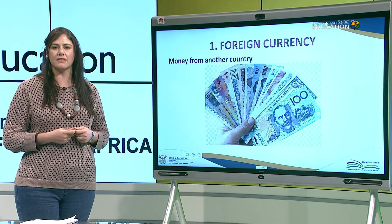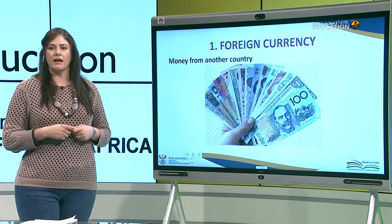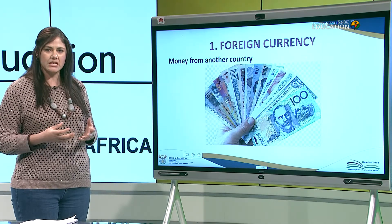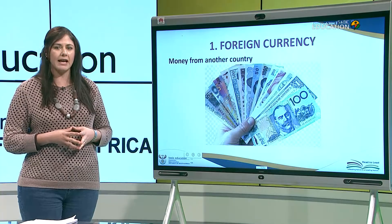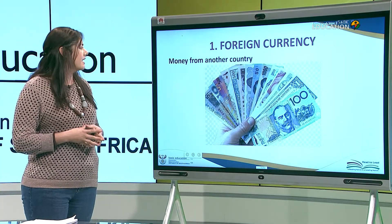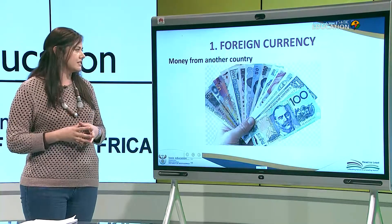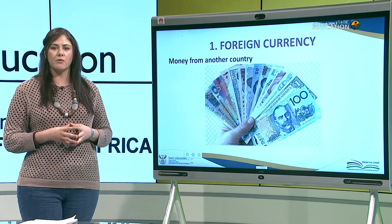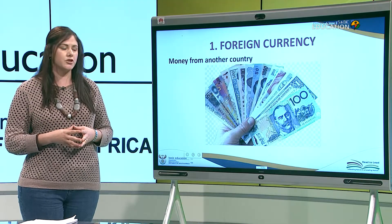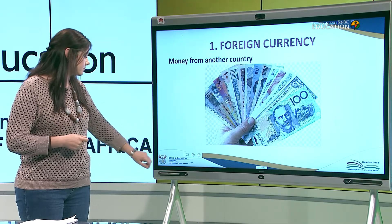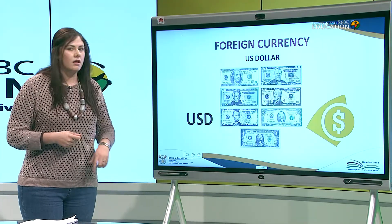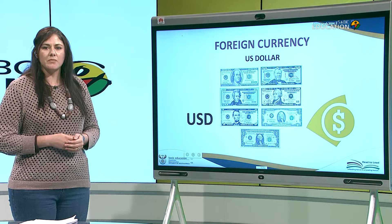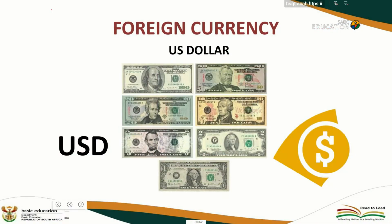Local currency is the currency that a country uses — for example, South Africa uses the South African RAND. Foreign currency is money from another country. An example is the US dollar.